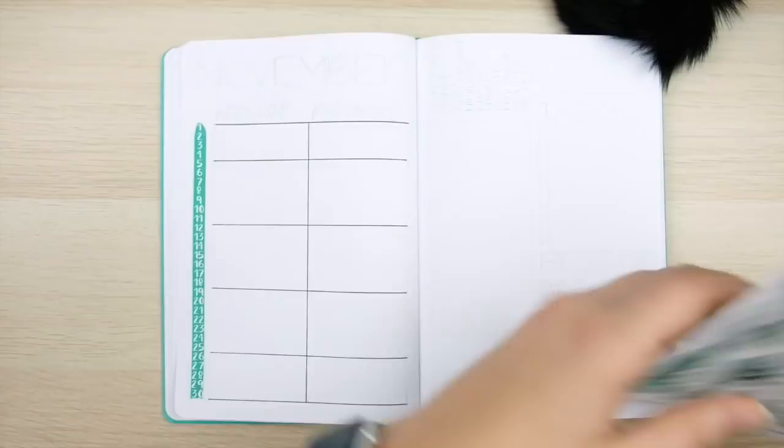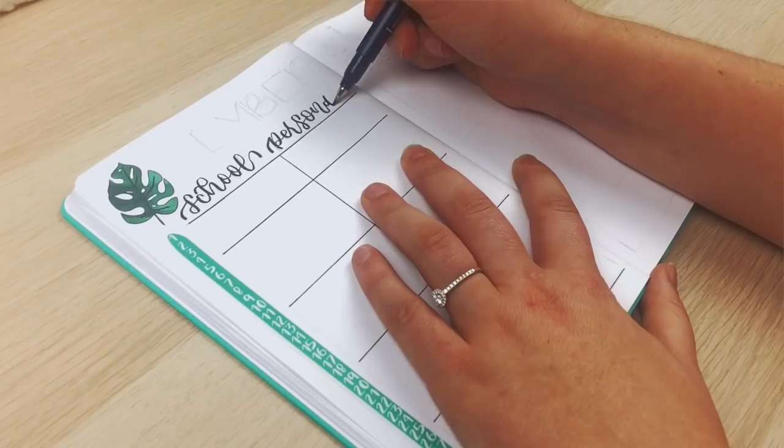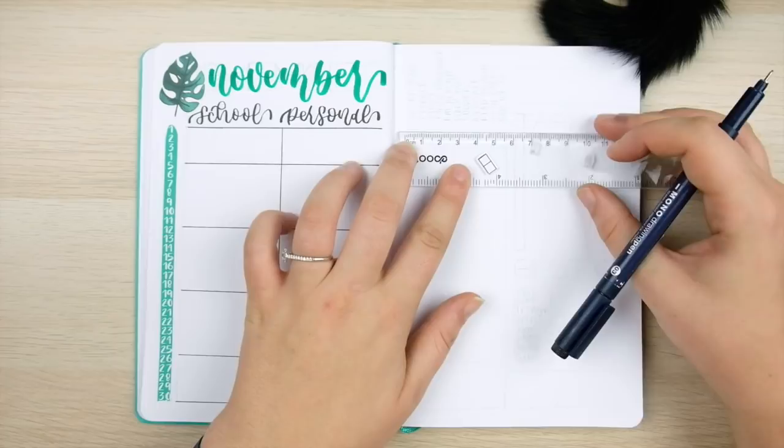All you really have to do is list one through thirty or thirty-one down the page. Now for this spread I'm going to split the left page into two columns to organize my events for the month, one for school events and the other for personal events. And I'm using these leafy green stickers for decoration.